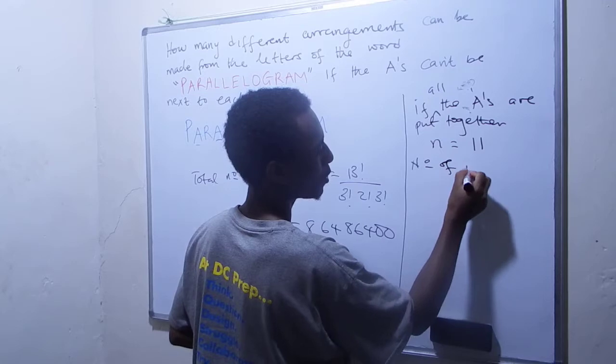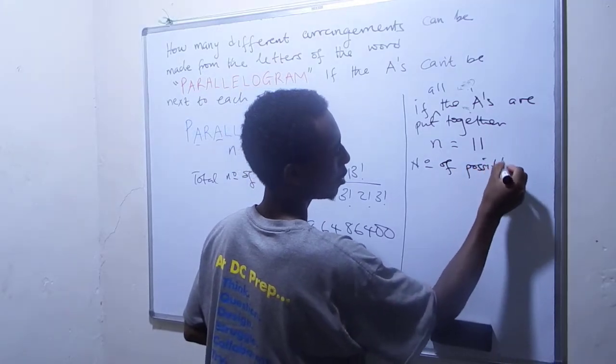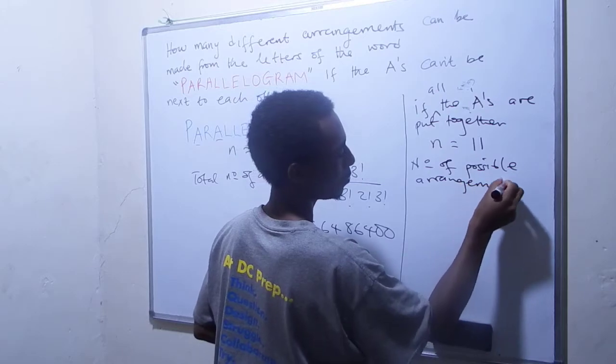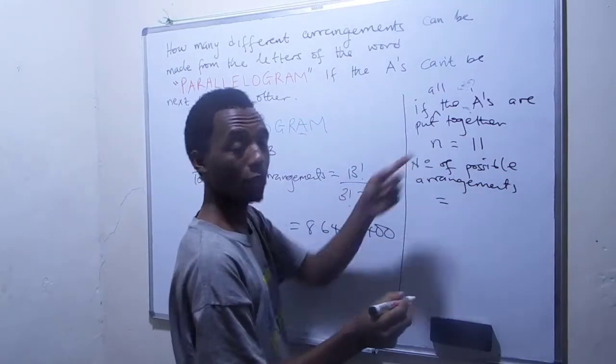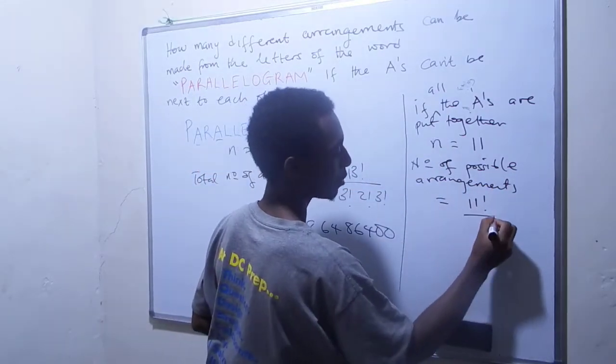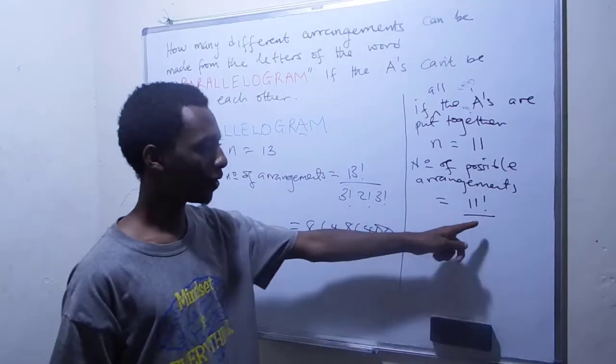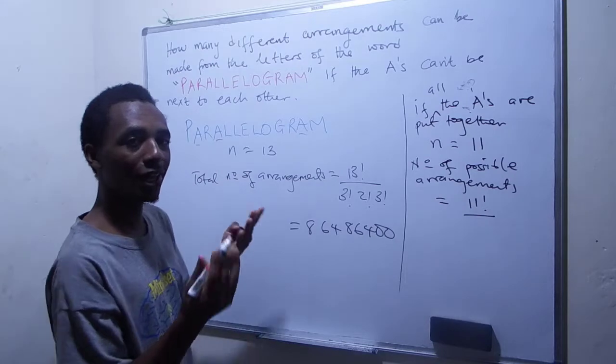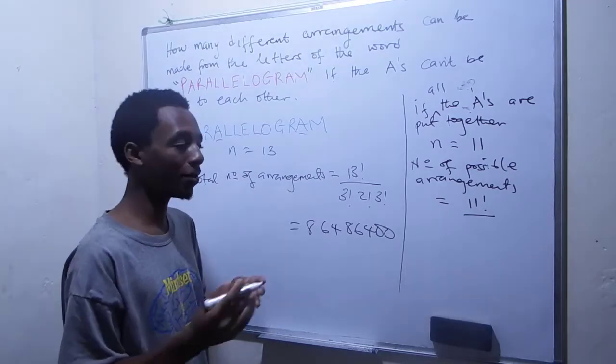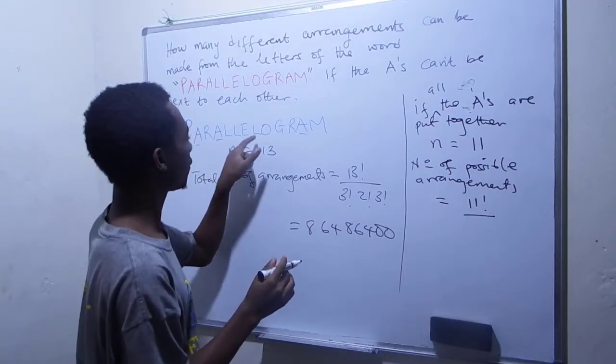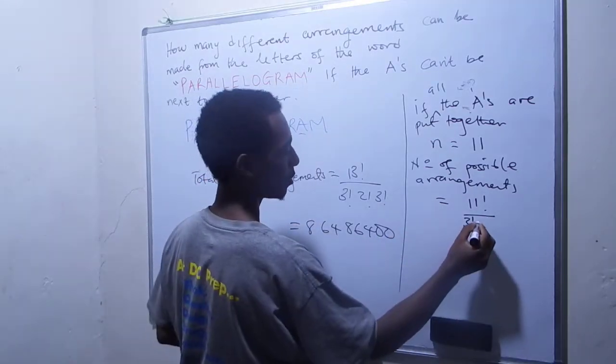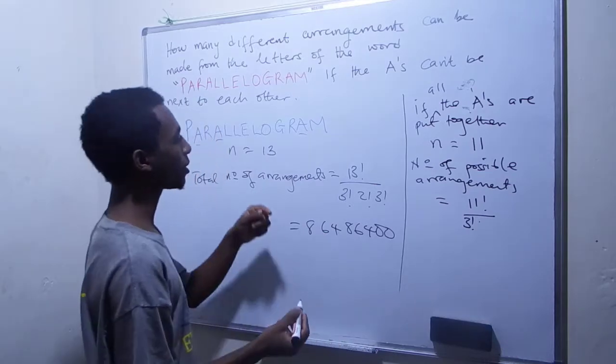So let's see how many arrangements we have. So the number of possible arrangements. Okay. So that's going to be 11 factorial. And then I'll just divide that by, let's see how many letters are repeating. Now that the A's are put together, we just take them as one item. It's not repeating. So we have the three L's which repeat. So that's divide by 3 factorial.